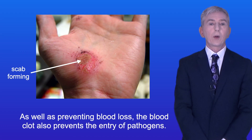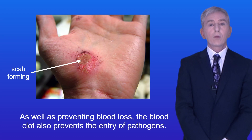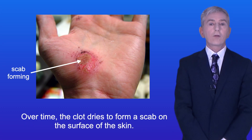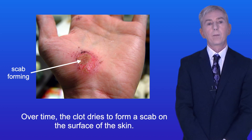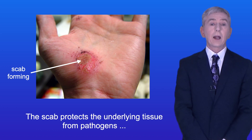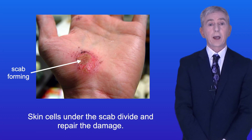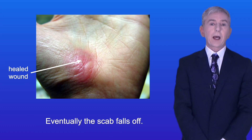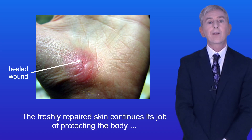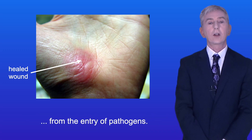As well as preventing blood loss, the blood clot also prevents the entry of pathogens. Over time the clot dries to form a scab on the surface of the skin. The scab protects the underlying tissue from pathogens while wound healing takes place. Skin cells under the scab divide and repair the damage. Eventually the scab falls off and the freshly repaired skin continues its job of protecting the body from the entry of pathogens.